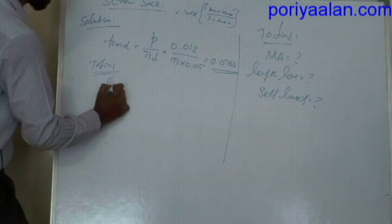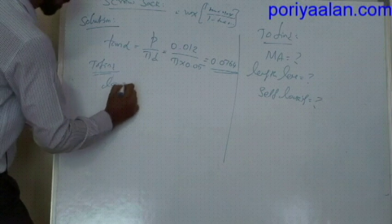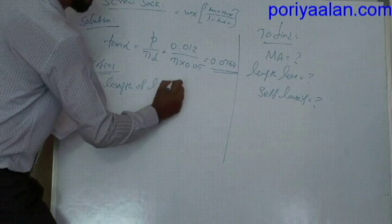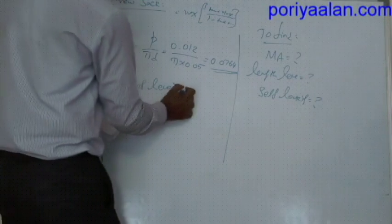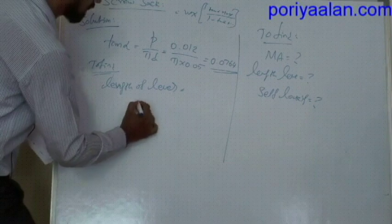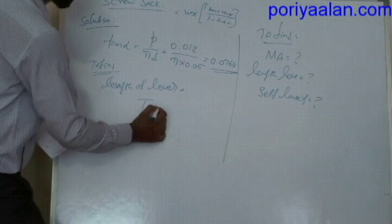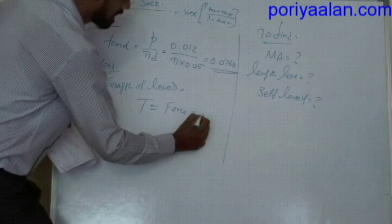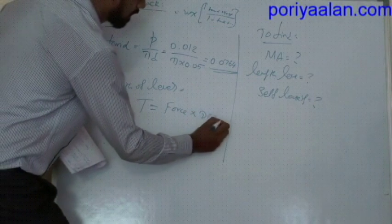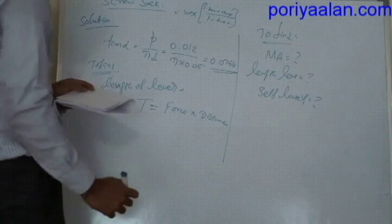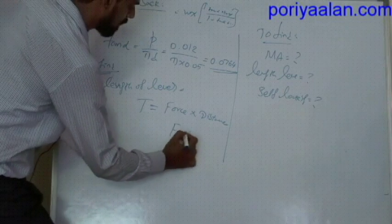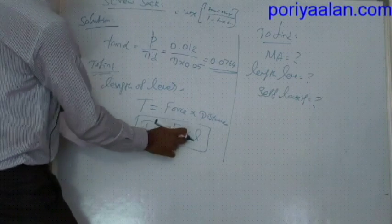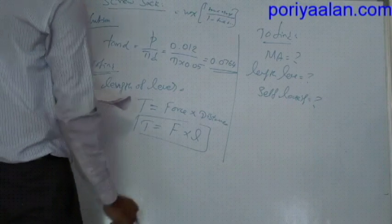To find the length of the lever, we use the formula: torque T = force × distance. The turning moment T is equal to F into L, where L is the length of the lever and F is the applied force.